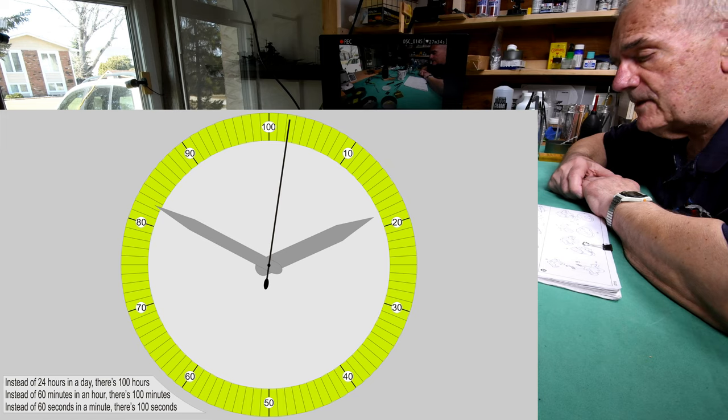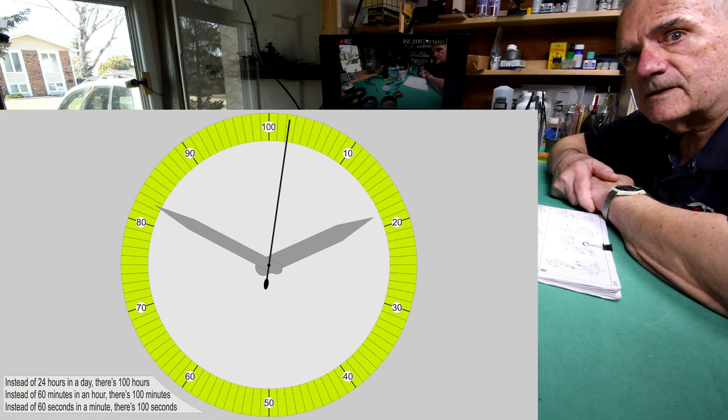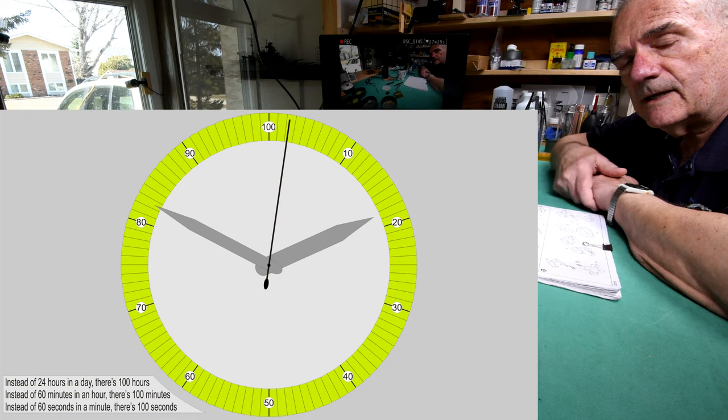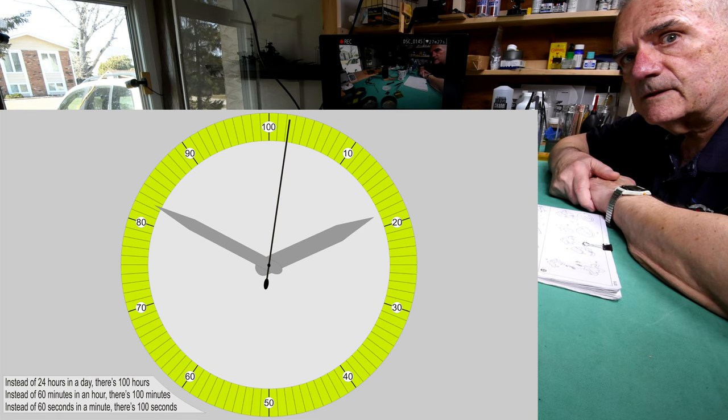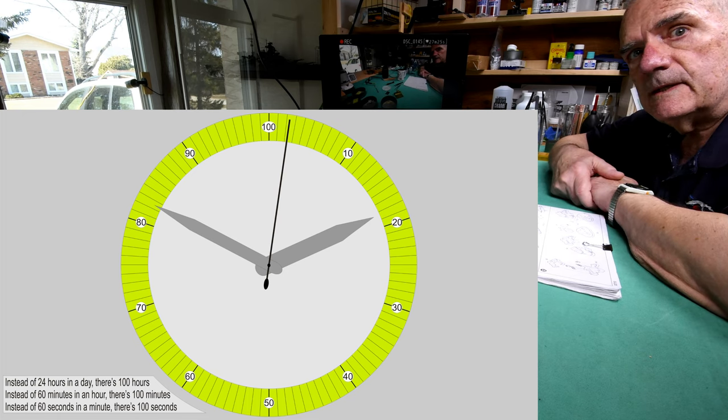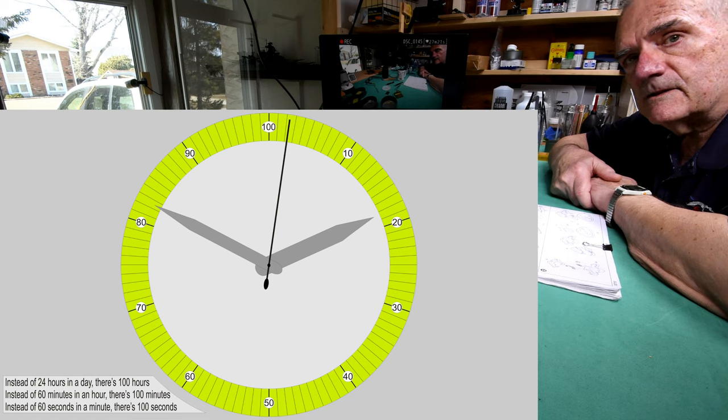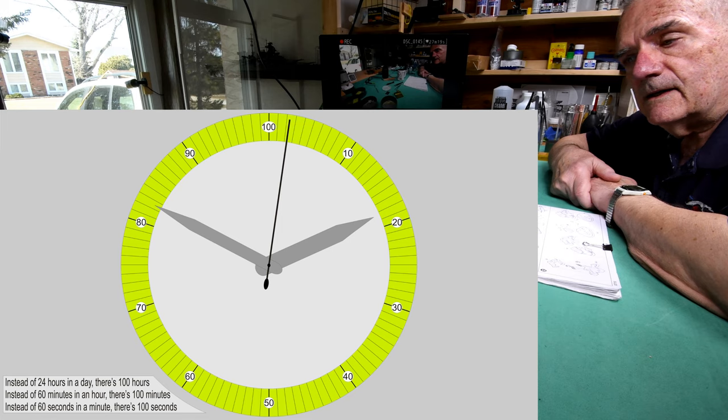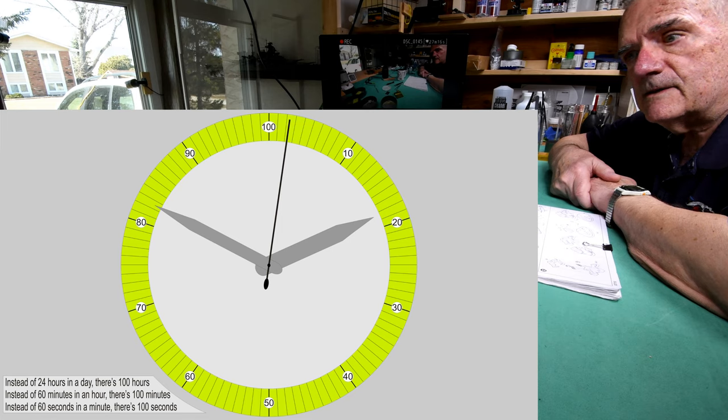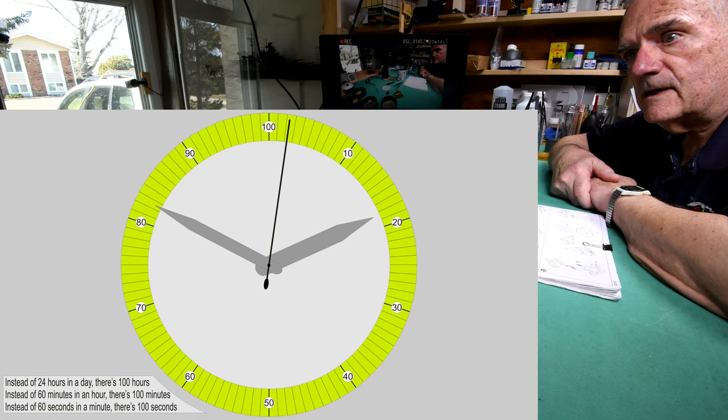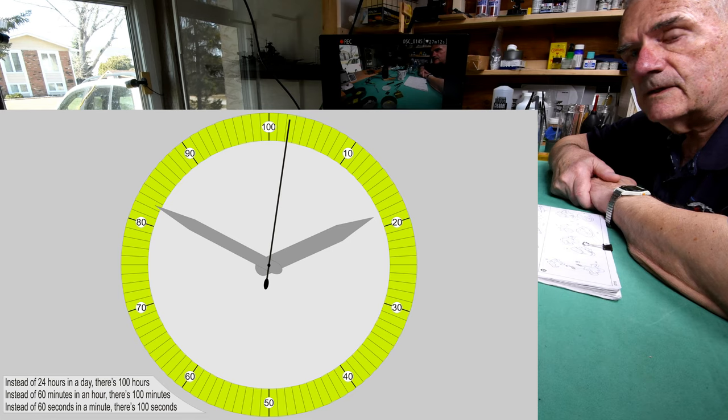Now right away some of you are probably thinking, well my goodness, that means that the sweep hand on the dial is just going to be going like an airplane propeller. But no, it wouldn't. There would be, it would work out that there would be a million seconds in a day. And I know right away that boggles people's minds and they're thinking the second hand is just going to be flying around. But it wouldn't.